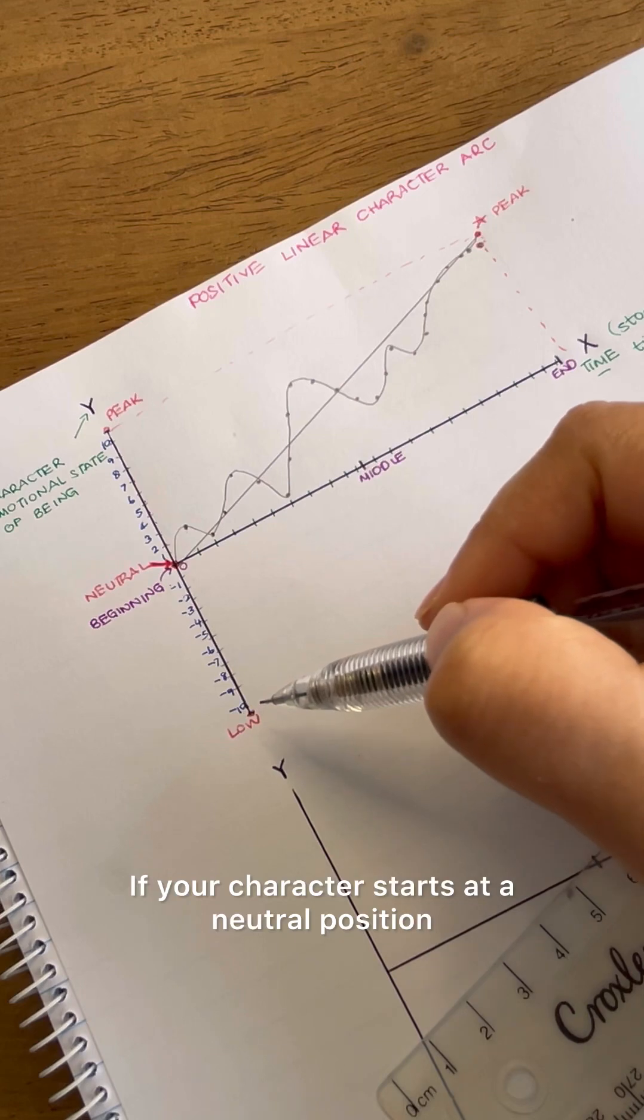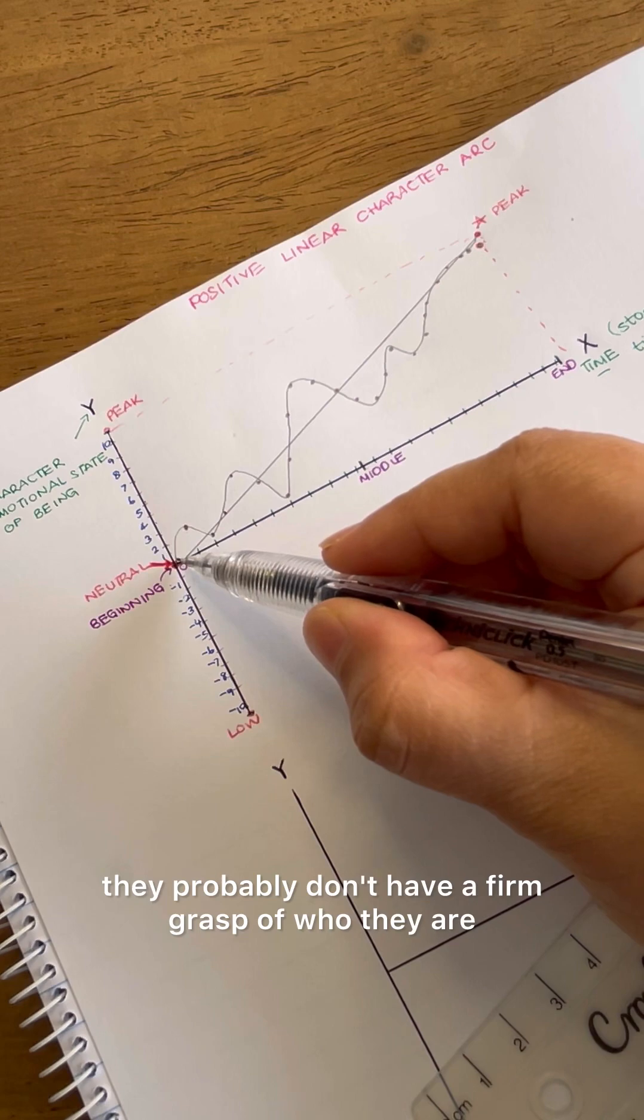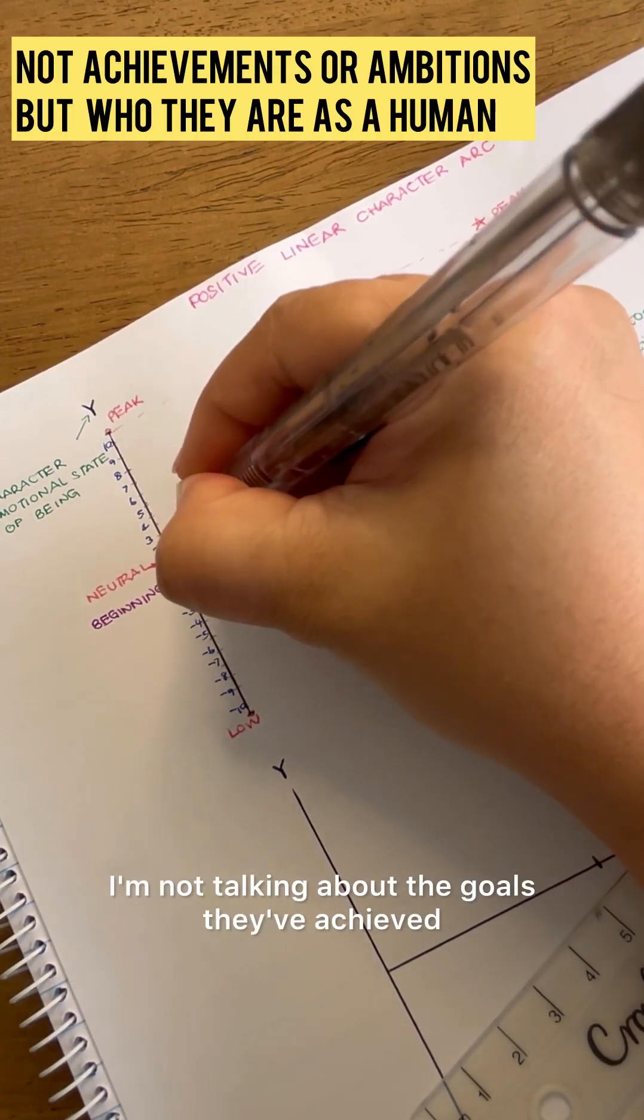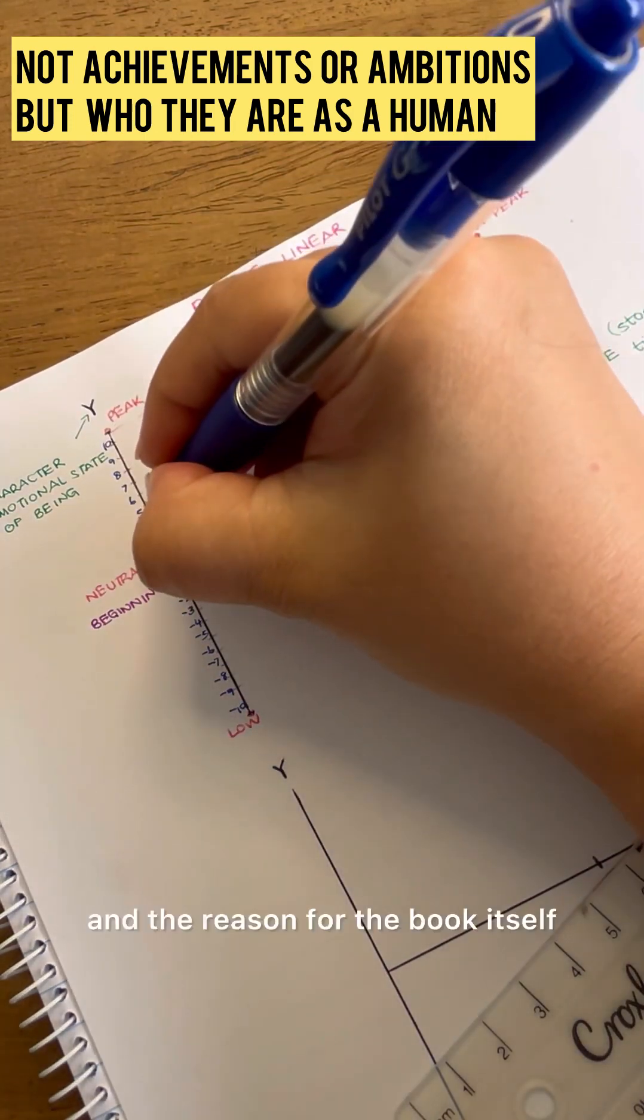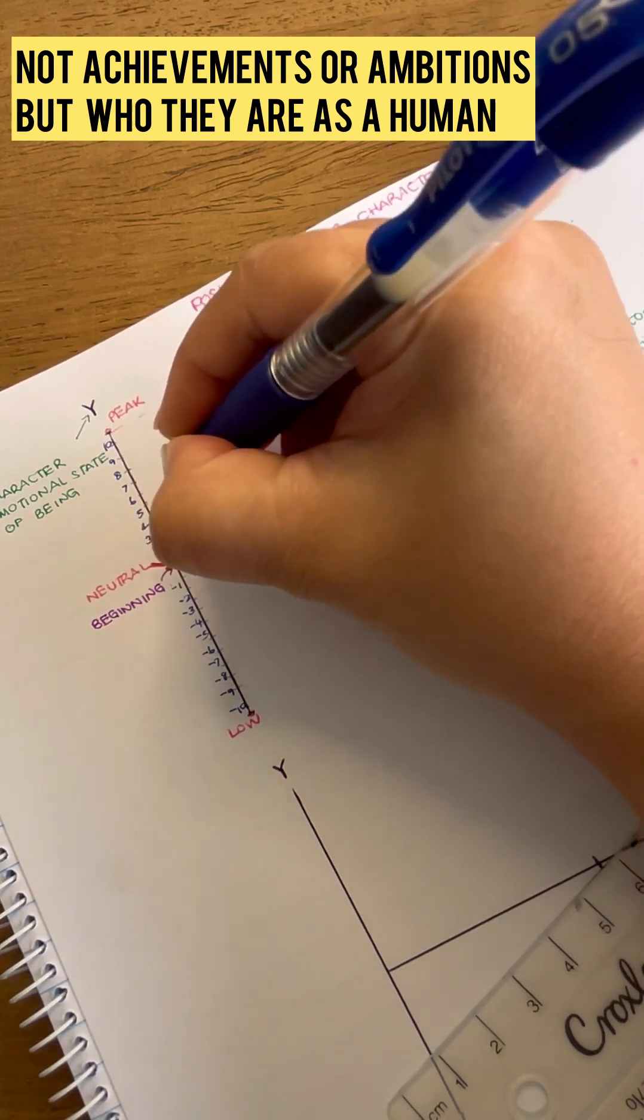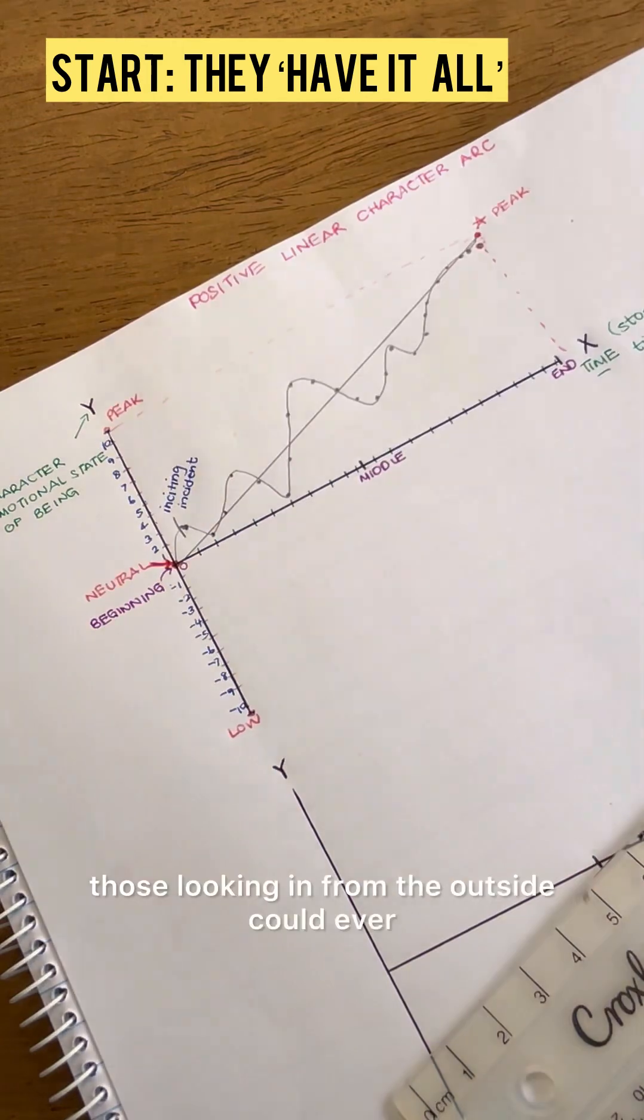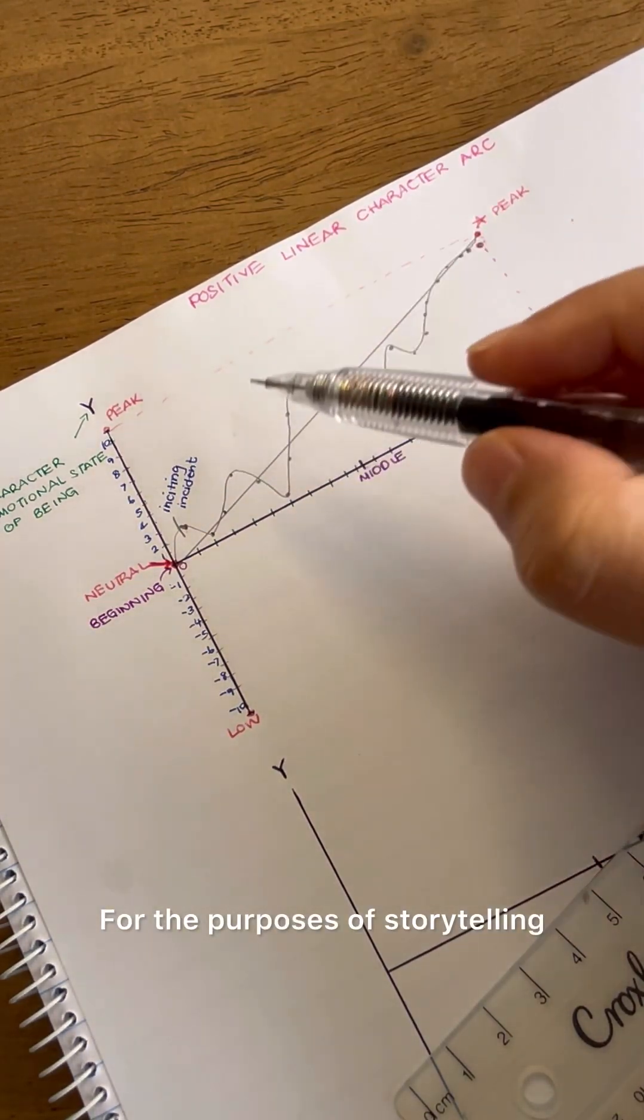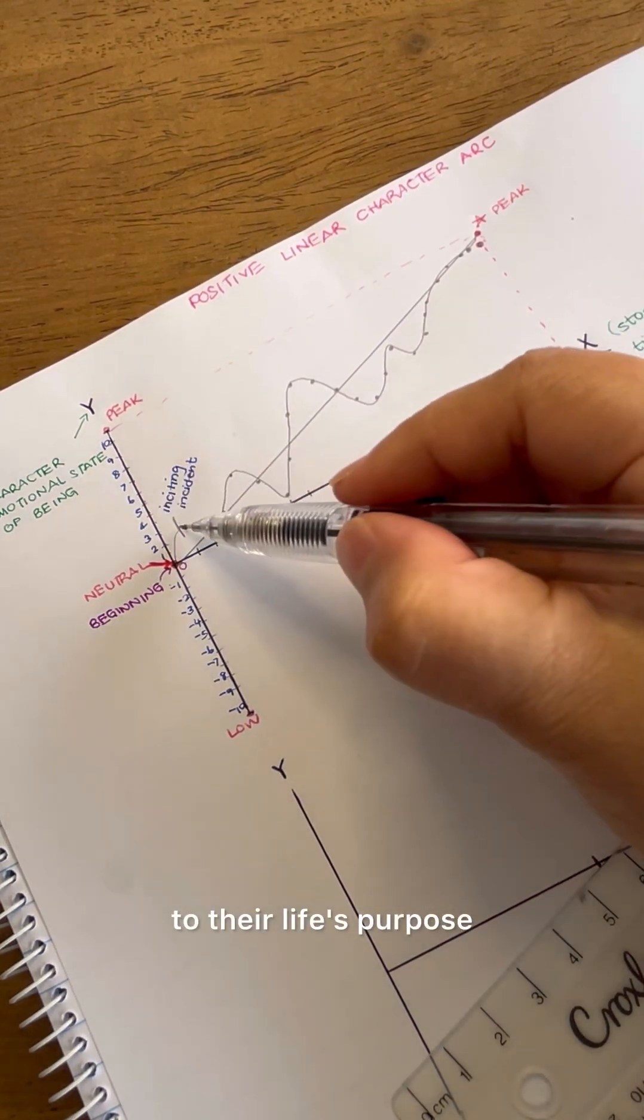If your character starts at a neutral position, in the most basic sense, they probably don't have a firm grasp of who they are. I'm not talking about the goals they've achieved. I'm talking about who they are as a human being and the reason for the book itself, which is to explore the character's emotional journey. So, at a glance, our neutral character might have everything those looking in from the outside could ever hope to achieve. For the purposes of storytelling, this would be the character's true awakening to their life's purpose.